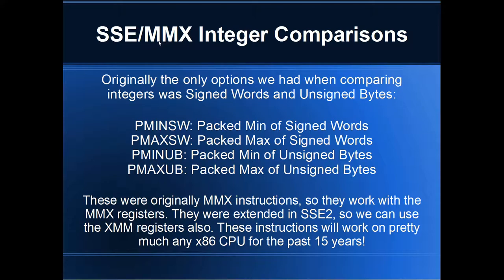Moving along, if you want to compare integers instead of floating point, there are more integer data types than floating point — bytes, words, dwords, qwords — so there are more of these instructions. You've also got signed and unsigned. Originally we only had four instructions: PminSW, PmaxSW, PminUB, and PmaxUB.